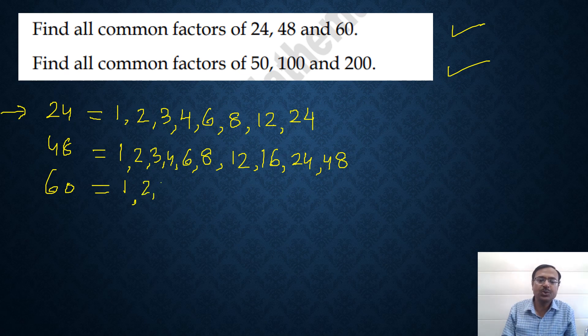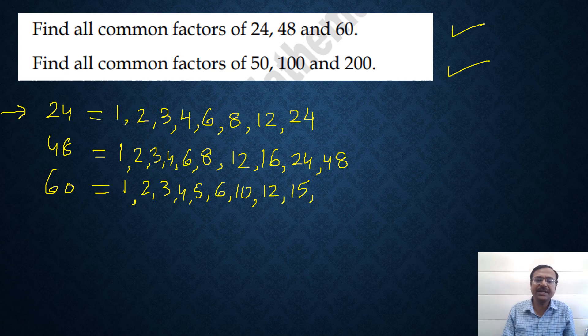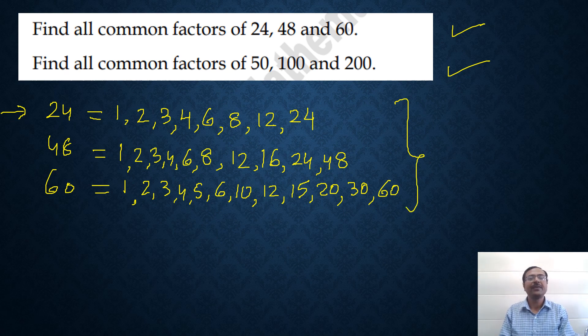60: 1, 2, 3, 4, 5, 6, all numbers divide 60. 7 doesn't divide 60, 10 yes, 10 divides 60, then 12, 15 divides 60, 20, 20 divides 60, then 30 and then 60. So these are the factors of 24, 48 and 60.